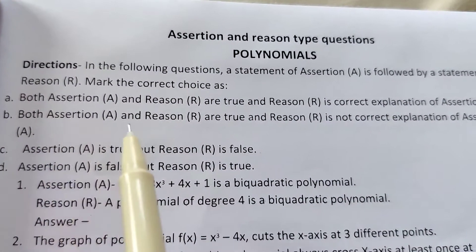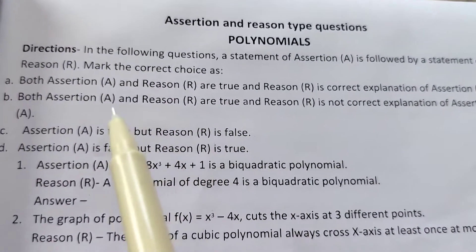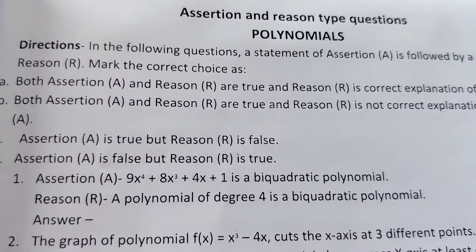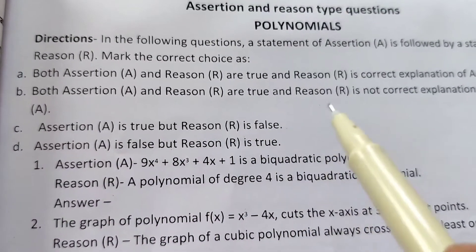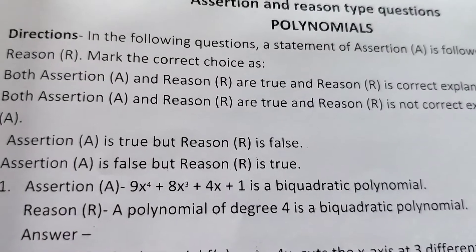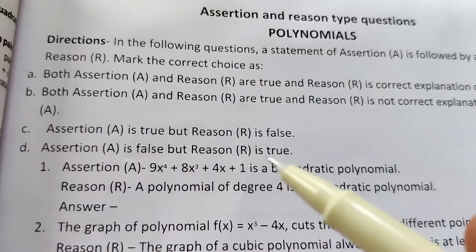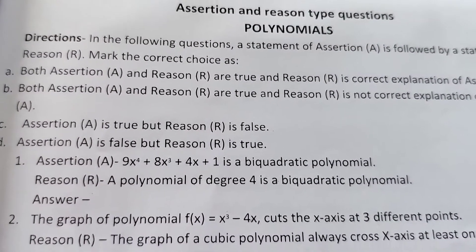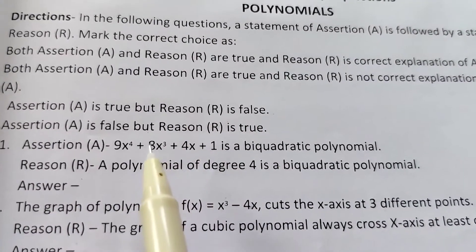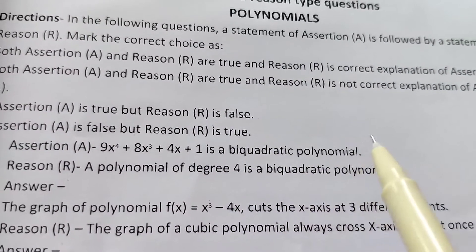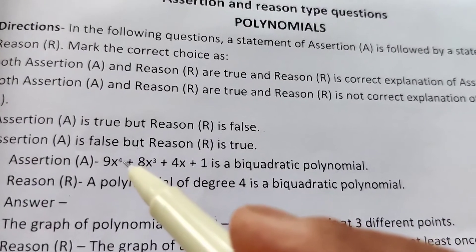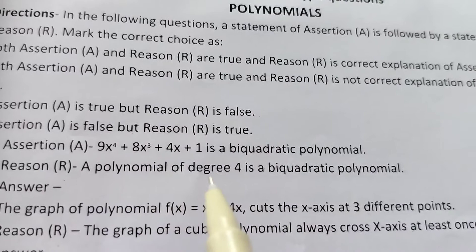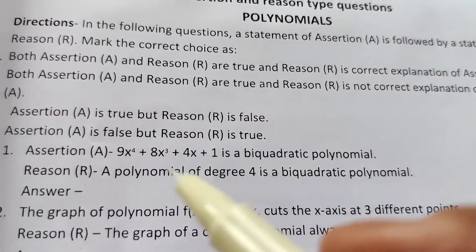Option B: both assertion A and reason R are true, but reason R is not the correct explanation of A — if both statements are true but the reason is not directly related. Option C: assertion A is true but reason R is false. Option D: we choose when assertion A is false but reason R is true. Now, for Question 1 — the quadratic is true and a polynomial of degree 4 is called a bi-quadratic polynomial — both are right, so the answer is option A.